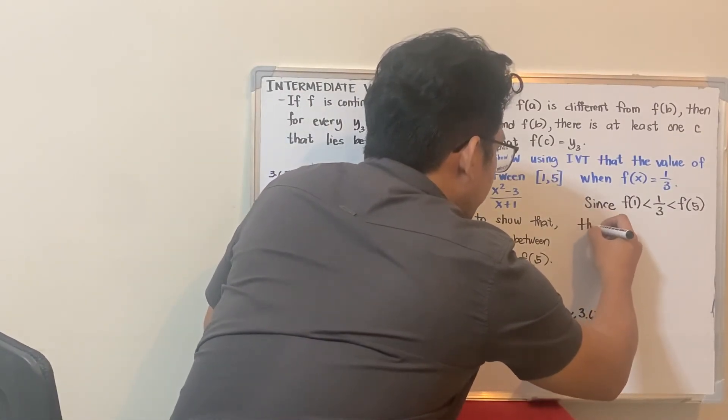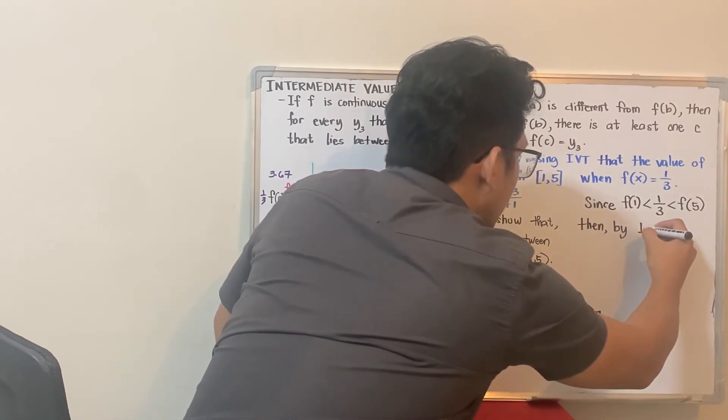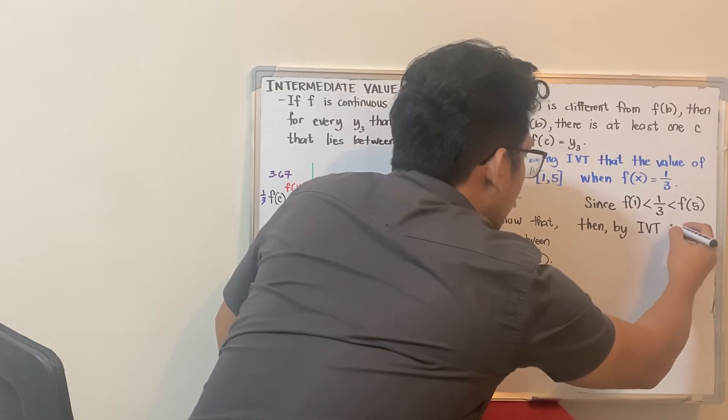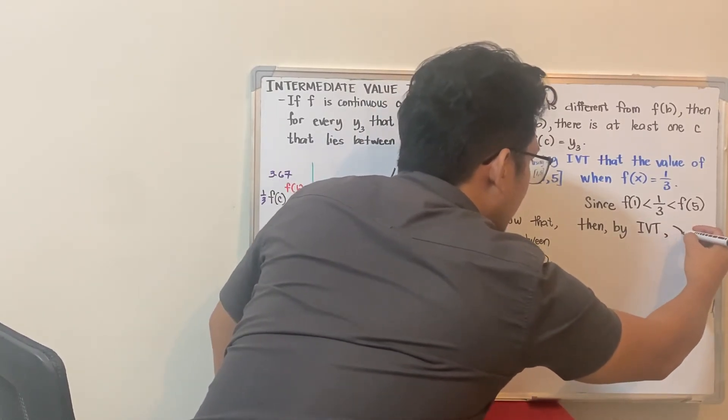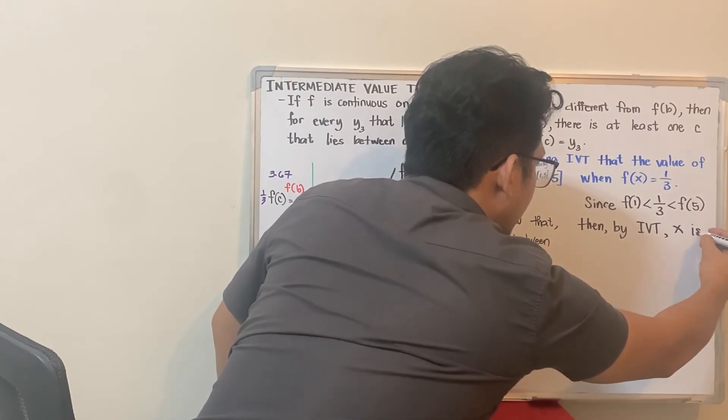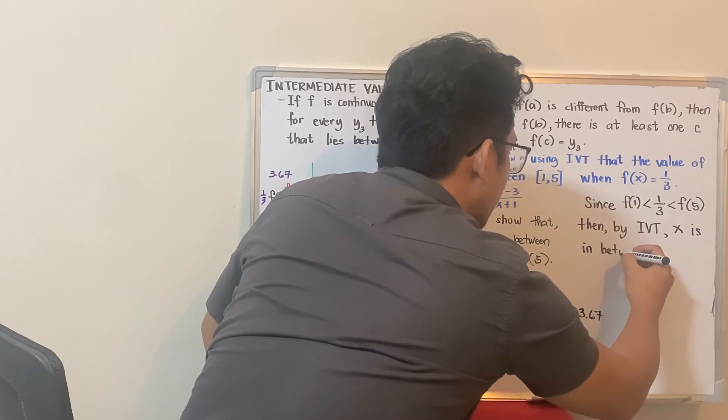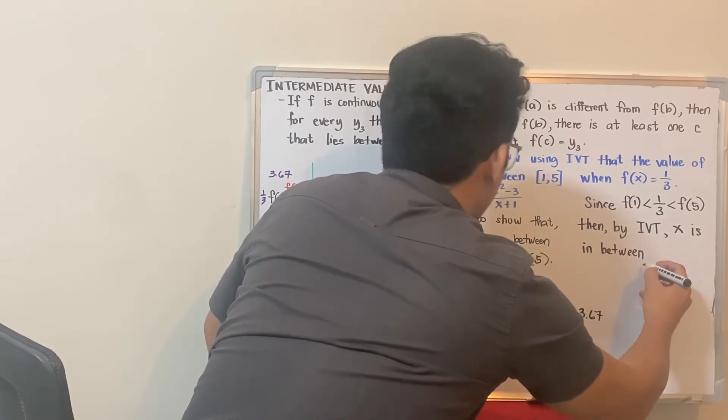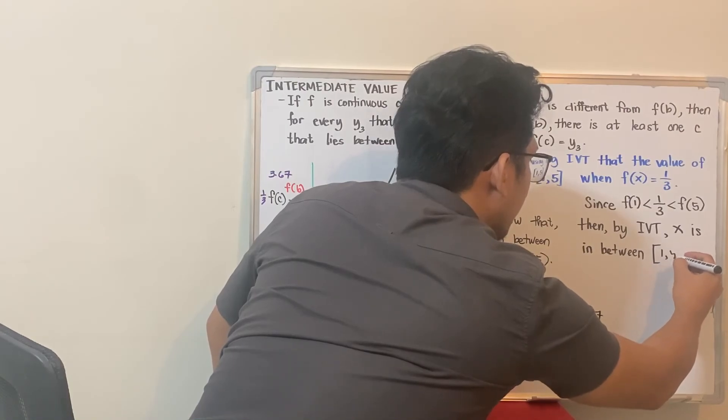Then by IVT, Intermediate Value Theorem, x is in between the closed interval 1 and 5.